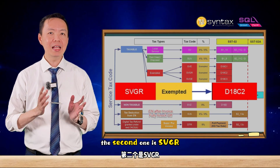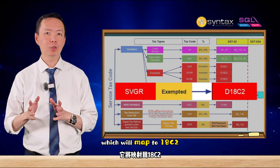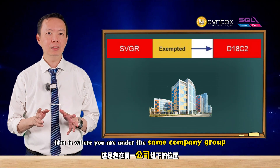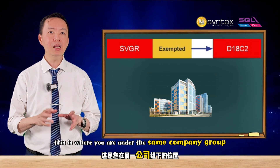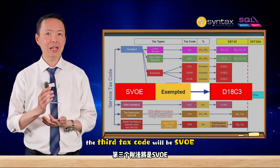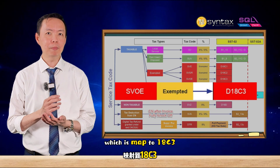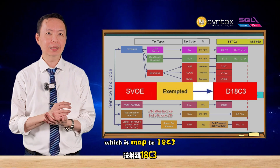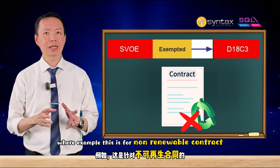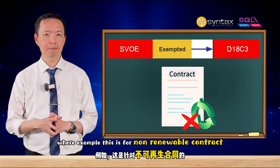The second tax code is SVGR, which will map to 18c2. This is where you are under the same company group. The third tax code will be SVOE, which is mapped to 18c3, for example for a non-reviewable contract.